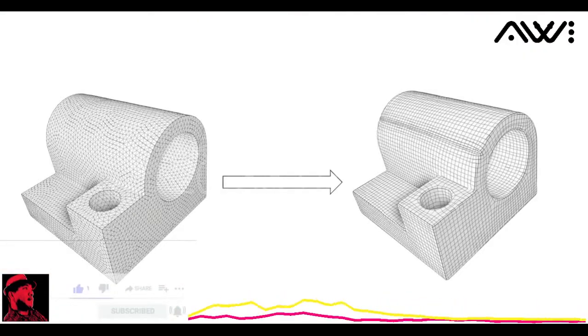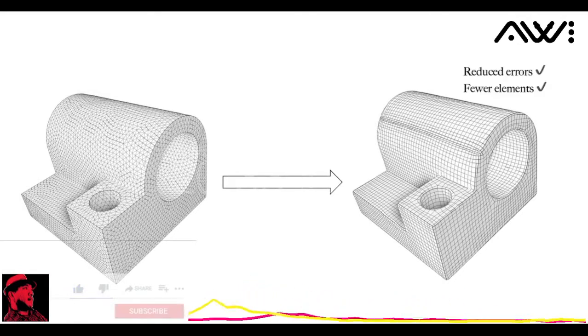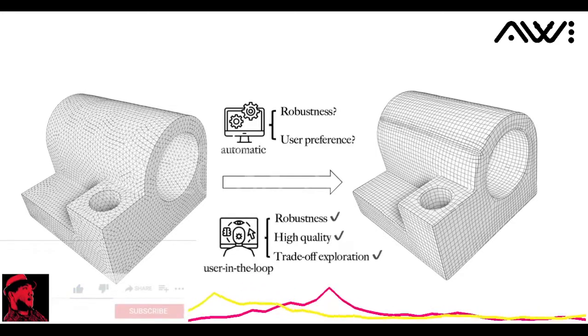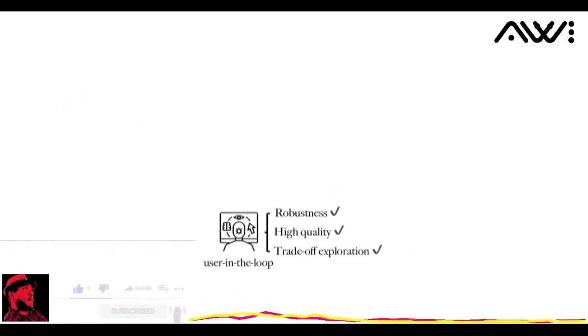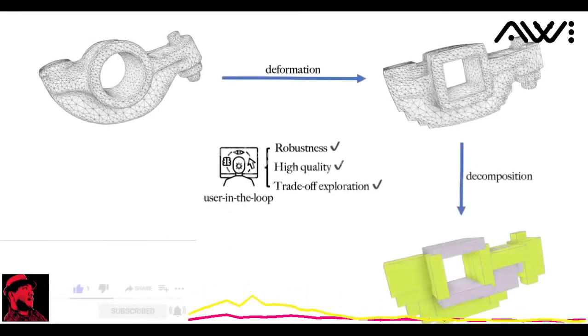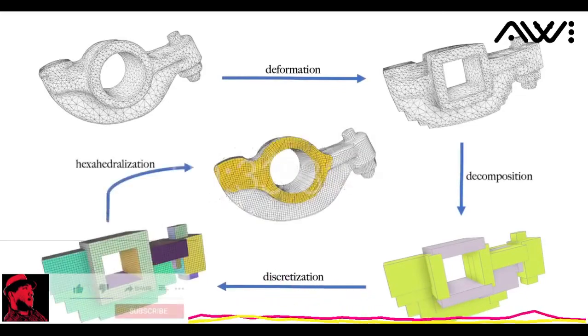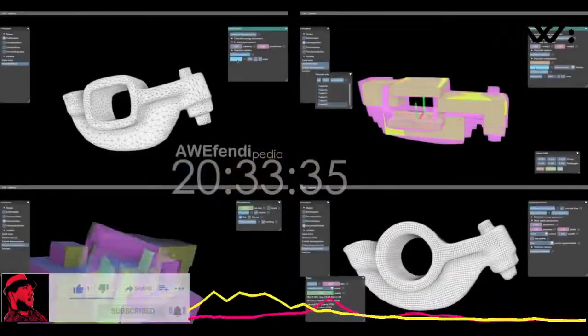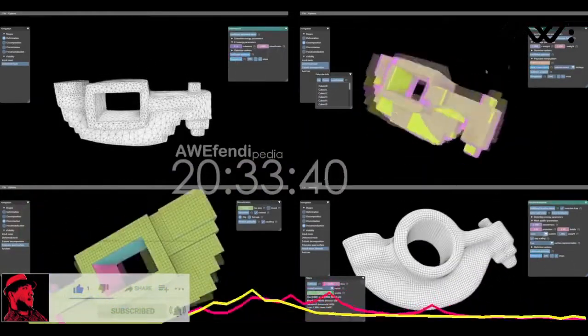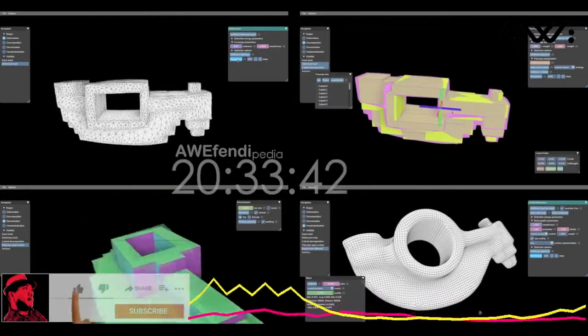Hex meshes are often preferred in numerical simulation over tetrahedral meshes for their reduced errors and fewer elements. Existing automatic hex meshing methods often suffer robustness issues and aren't aware of user preference. We propose an interactive four-stage pipeline where the user can reliably generate high-quality hex meshes and explore desirable trade-offs. Here's a demo of generating a hex mesh of the rocker arm using our system. Therefore, generating hex meshes can be as easy as playing Minecraft.